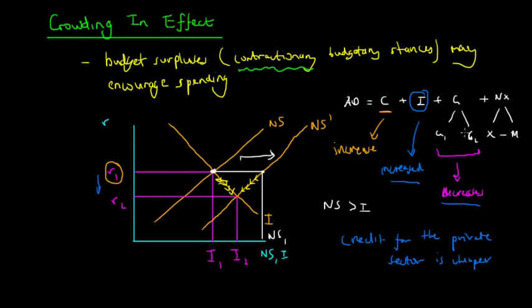So what this means is that although the government tries to steady or lower aggregate demand by this contractionary budgetary stance, the opposite effect has occurred due to this crowding in effect. The aggregate demand in fact has been stimulated because of this increase in both consumption and investment spending due to a decrease in the interest rates. So that's how the crowding in effect has an inverse or a contradictory relationship with budgetary policy.